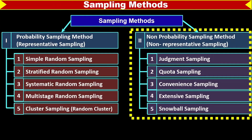Now, I will discuss non-probability sampling method. These are the non-representative sampling methods. In this, there are five methods: judgment, quota, convenience, extensive, and snowball.